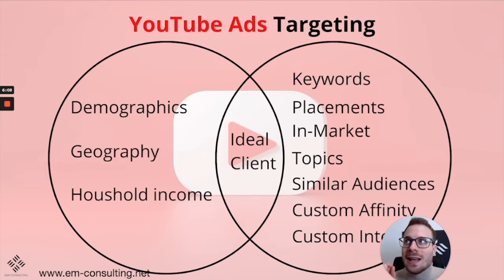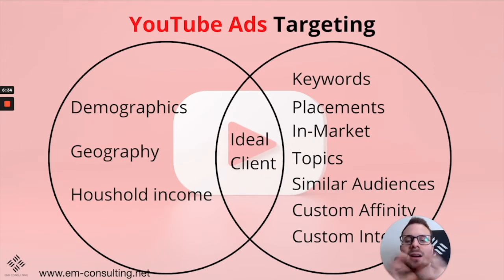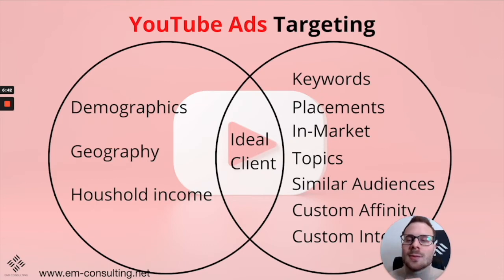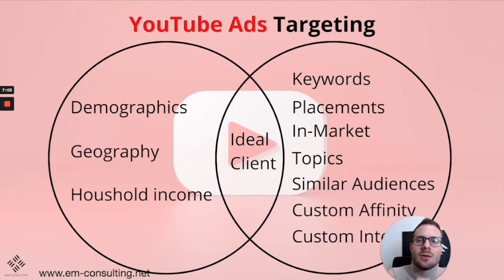Then you have custom affinity audiences — you can literally take a competitor's website URL, enter it, and get viewers similar to that competitor's website traffic. And then you have custom intent audiences: this is based on what people are searching for on Google. You evaluate Google search intent and translate it into YouTube. You're basically taking Google traffic's search intent and putting it onto YouTube, which works amazingly well because the audience is a little bit broader.